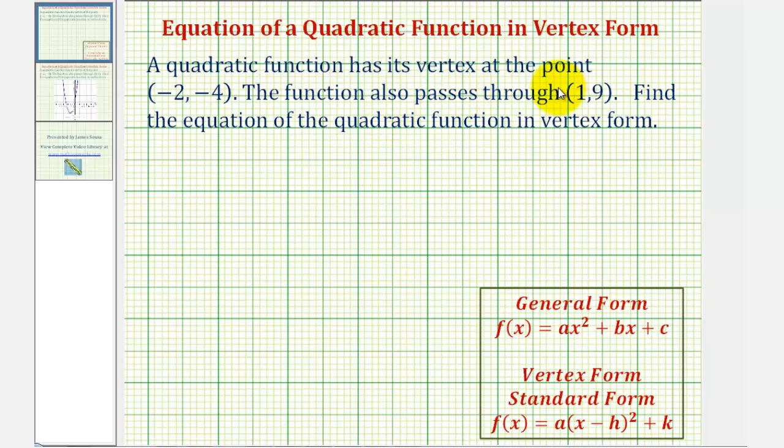A quadratic function has its vertex at the point negative two comma negative four. The function also passes through the point one comma nine. We want to find the equation of the quadratic function in vertex form, also referred to as standard form.